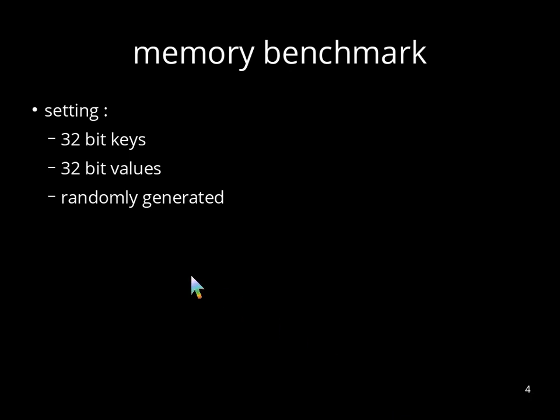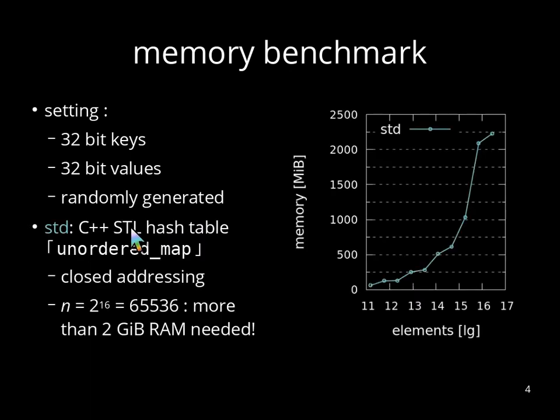And we take the keys and the values from a random generator. Now, one simple solution is to use the C++ STL unordered map hash table. But you can see in this graph that we get here already a huge peak around 2GB of RAM, only by hashing 2 to the power of 16 elements.